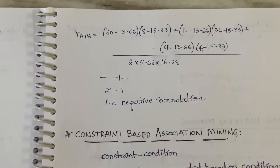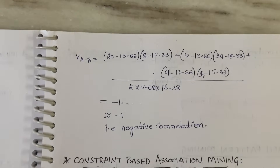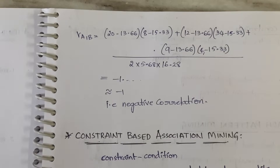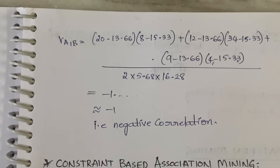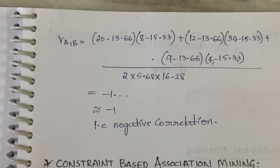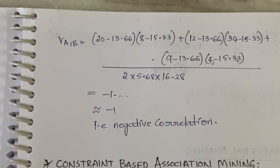The result is approximately −1, which means negative correlation. Negative correlation means if one value increases the other value decreases — an inverse proportion. This is how you find the correlation coefficient and, based on its value, determine the relationship between the two variables.